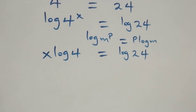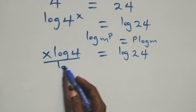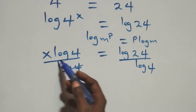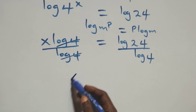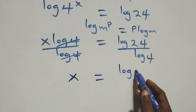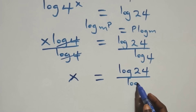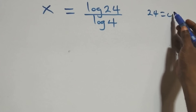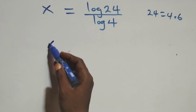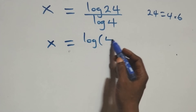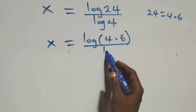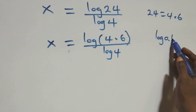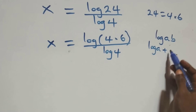Next step, we divide both sides by log 4. Log 4 cancels on the left side and we have x equals to log 24 over log 4. We can write 24 as 4 times 6, which implies x equals to log of 4 times 6 over log 4.